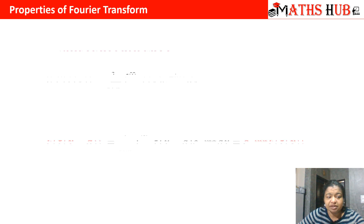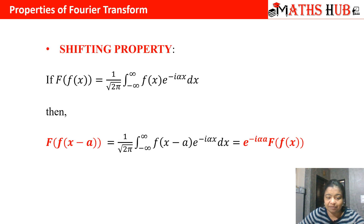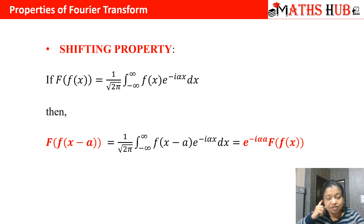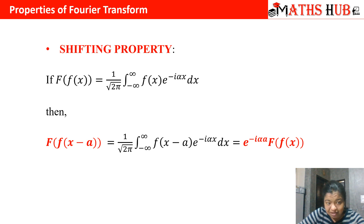The next property is the shifting property. The Fourier transform of any function f(x) is given by: 1 over root(2π) times the integral from minus infinity to infinity of f(x) · e^(−iα x) dx. By now you will be familiar with this formula for calculating the Fourier transform of any function f(x).